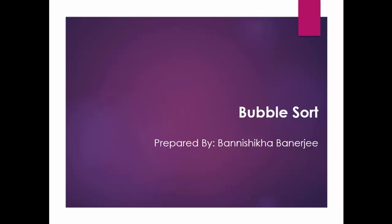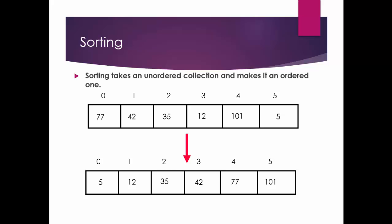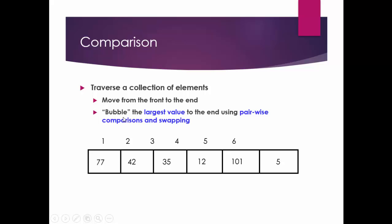So this is the array: 77, 42, 35, 12, 101, and 5. This is the zeroth index through the fifth index, so there are six elements in this array. What we want is the sorted array — 5 is the smallest number so it should be first, and 101 is the largest so it should be last.